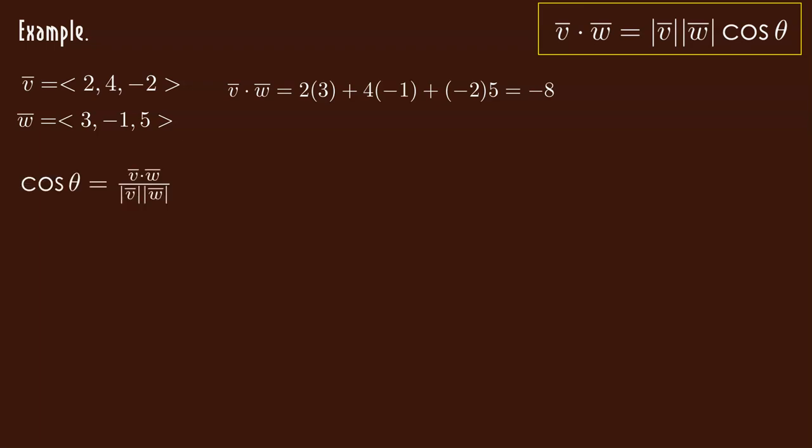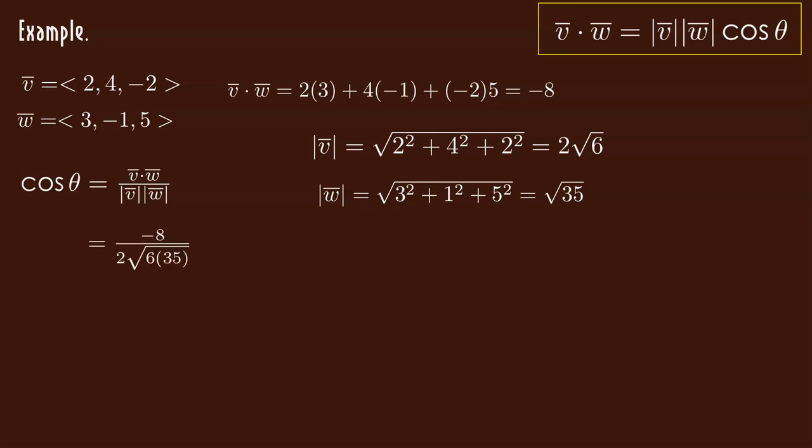So I have this expression. So I can find out that theta, or the cosine of that theta, by using the dot product and multiplying their magnitudes. Let's find their magnitudes. The magnitude of v is 2 square root of 6. And the magnitude of w is square root of 35. So that means cosine of theta can be written as negative 8 over all that. Let's simplify that. Well, make a decimal of it. And I get negative 0.276026. Yippee, that doesn't mean much to me right now. But I can do arc cosine of both sides and get that theta is equal to 1.85.